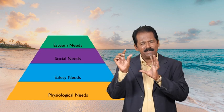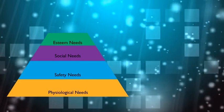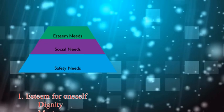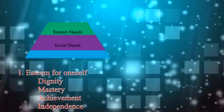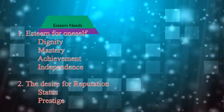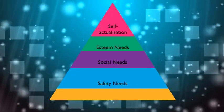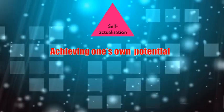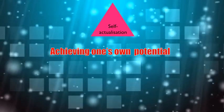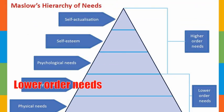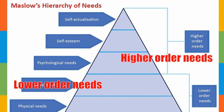The fourth one relates to our esteem needs — achieving life goals. The fifth level is self-actualization: achieving your life goal. The first two needs are lower order needs and the other three needs are called higher order needs.